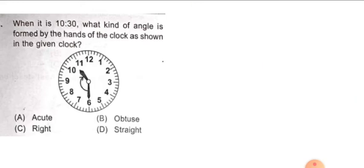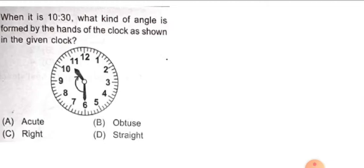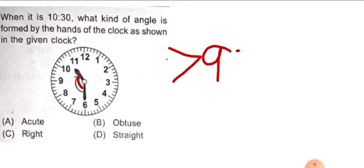Now let's start with the questions. Question: when it is 10:30, what kind of angle is formed by the hands of the clock as shown in the given clock? Options are acute, right, obtuse, straight. If you observe here, the angle is greater than 90 degree, which means it is obtuse angle. The right option is B.